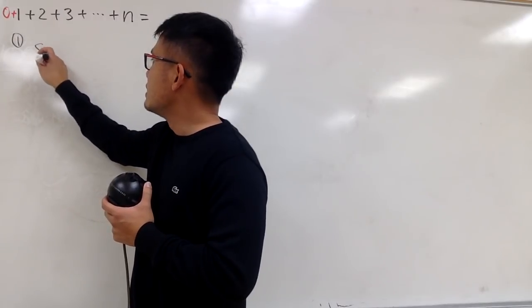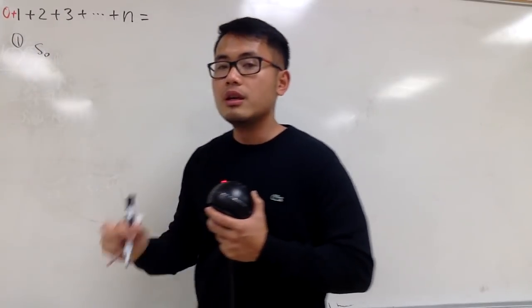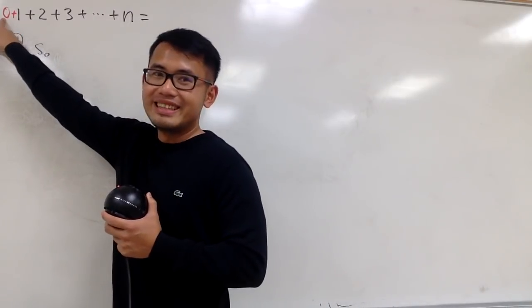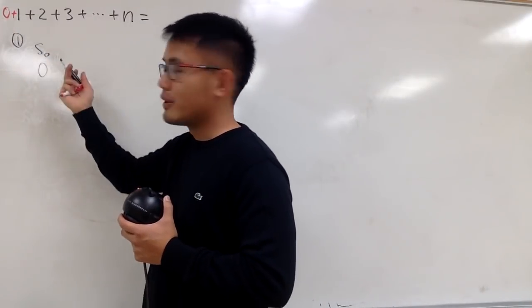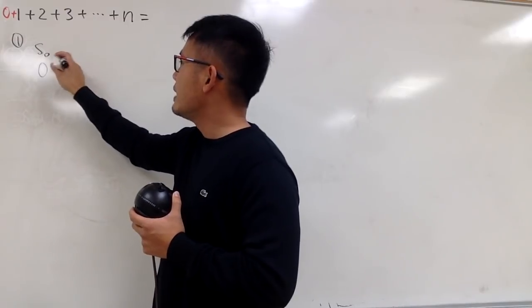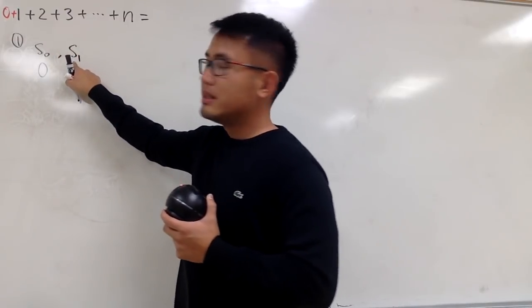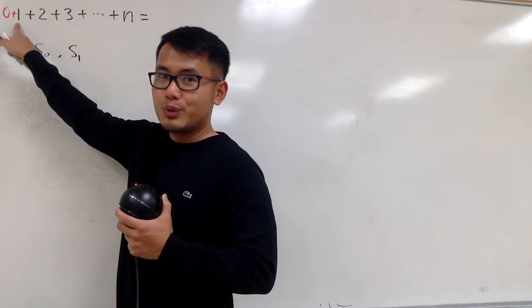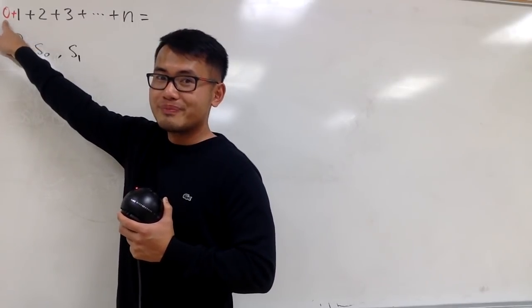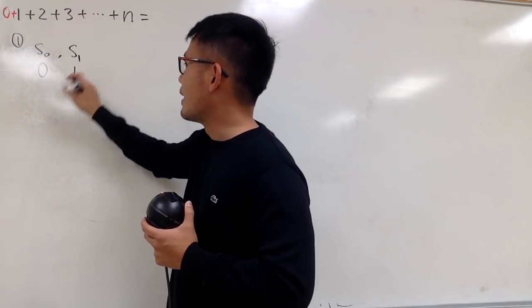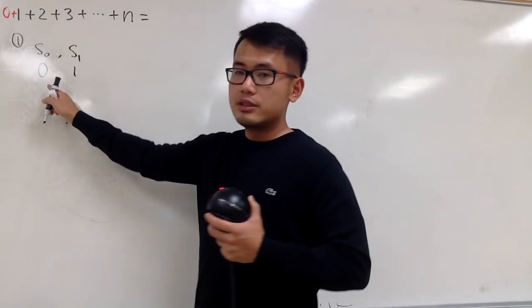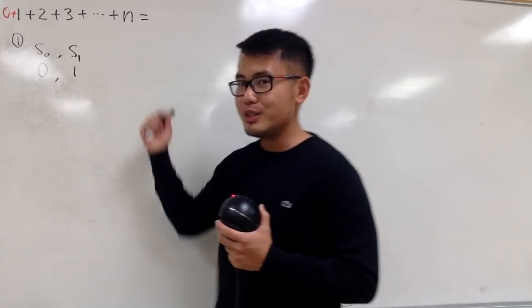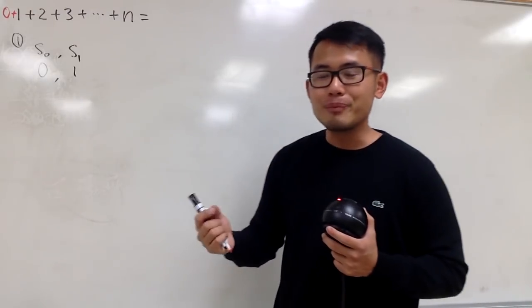What we will do is use S0 to denote the zeroth partial sum, meaning you look at the sum starting at 0, which we know is 0. Then S1 is the partial sum when n equals 1 — add them up, you get 1. This right here is just going to be a sequence, and our goal is to find a formula for the sequence. The partial sum is a sequence.